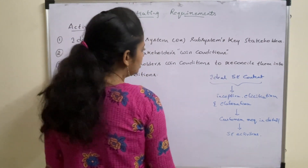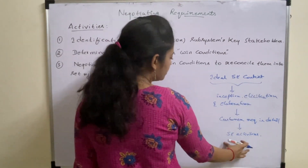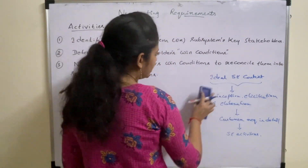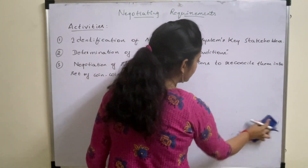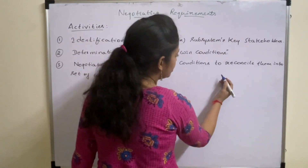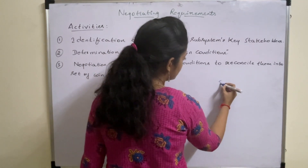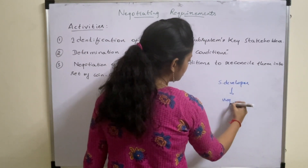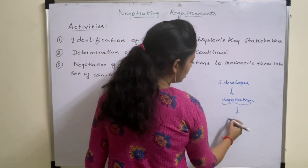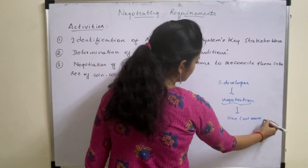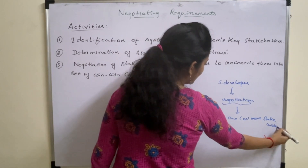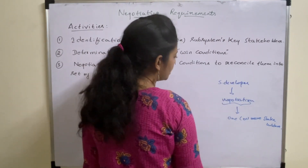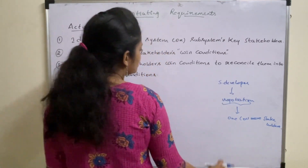Unfortunately, this ideal process won't happen — it happens rarely. So in reality, you, the software engineer or software developer, need to enter into negotiation with one or more stakeholders. Negotiation is performed between the developer and stakeholders — two parties — in order to reach an agreement or to resolve an issue.